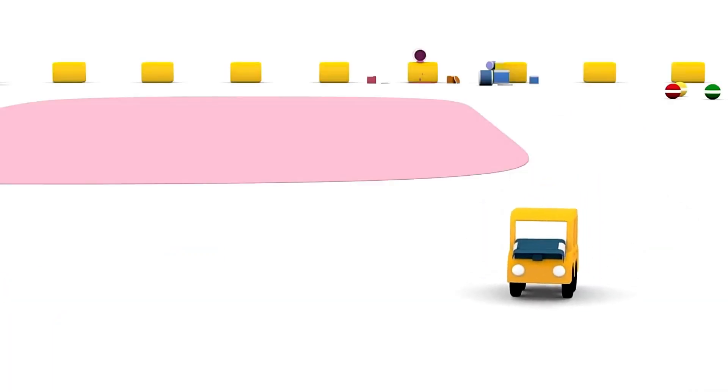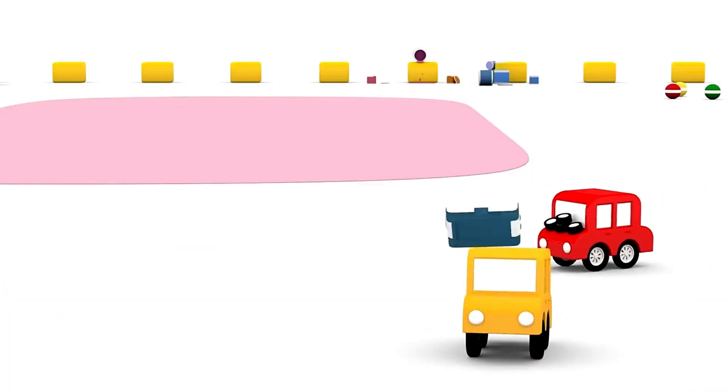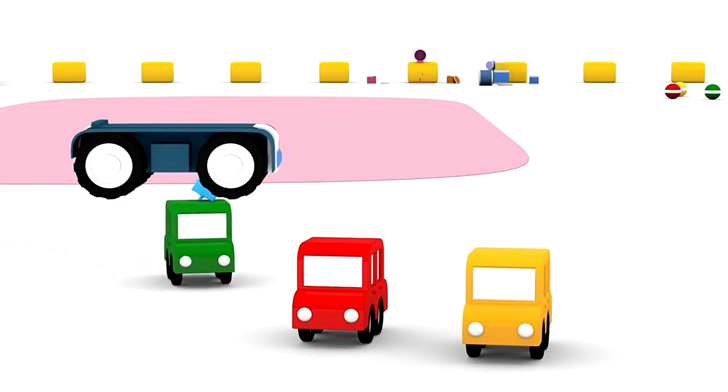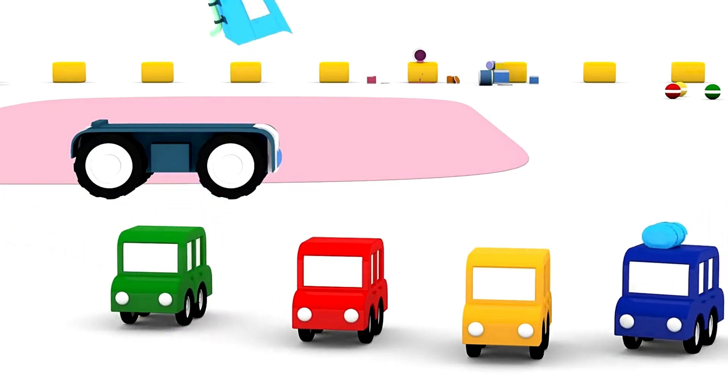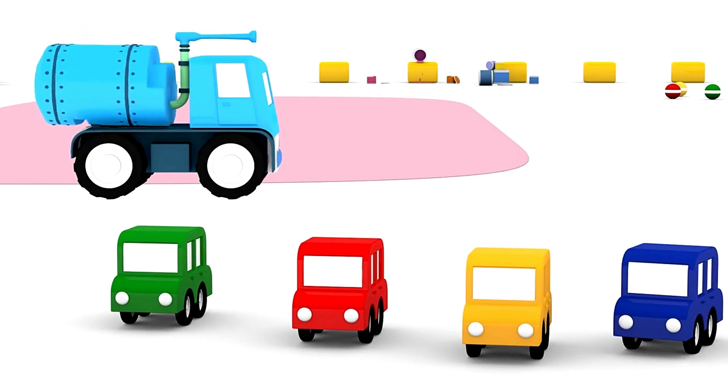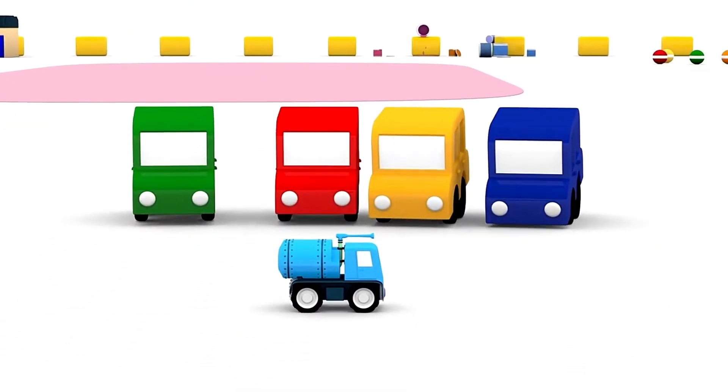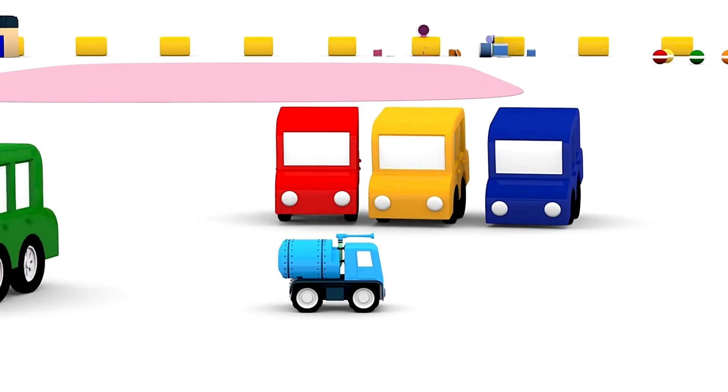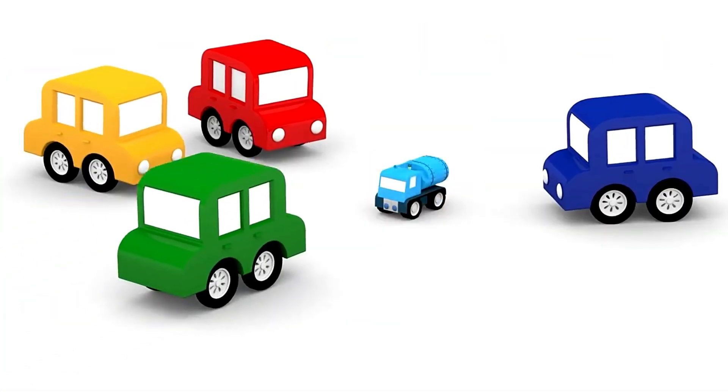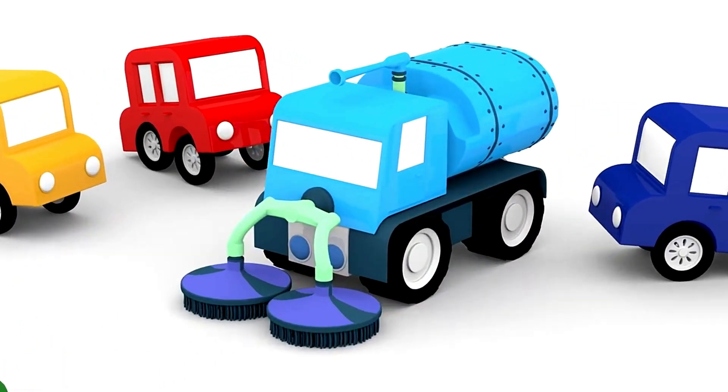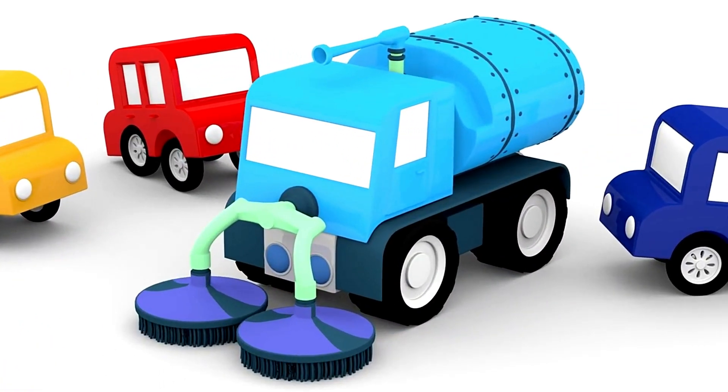So now let's try to assemble our truck from these parts. Chassis, wheels, cabin and water tank. But the truck is missing something very important. Green car, can you help? Super! Yes, it needed two brushes to be a sweeper truck.